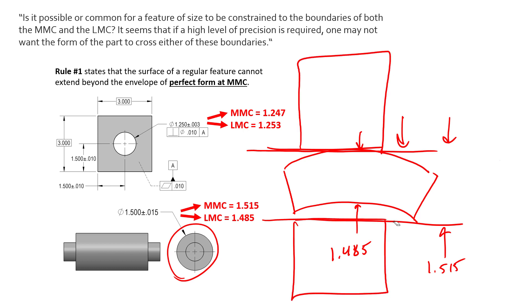Let's say this goes inside a bearing. If the form and size of this part stack up to larger than the smallest inside diameter of our mating part, then we're going to have assembly issues.